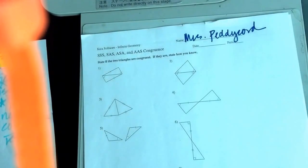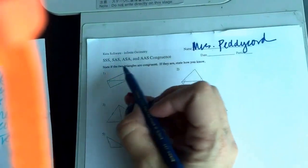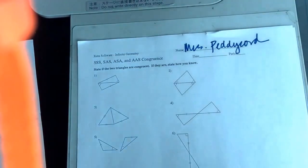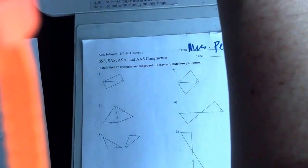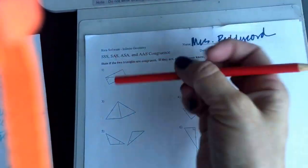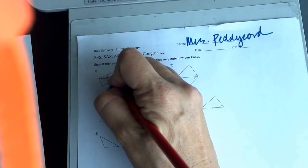First of all, what you're looking to decide is if the two triangles are congruent. As I go through this, I'm not going to do them all, I'm just going to do a few.